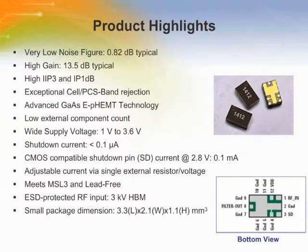Avago Technologies ALM 1412 is an LNA module with integrated filter designed for GPS band applications at 1.575 GHz. The LNA uses Avago Technologies' proprietary Gallium Arsenide Enhancement Mode process to achieve high gain with very low noise figure and high linearity.